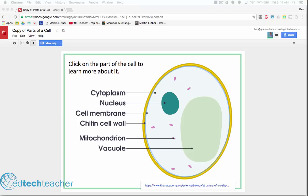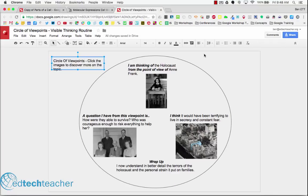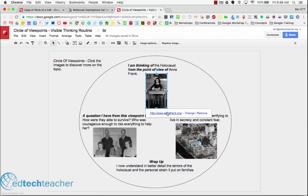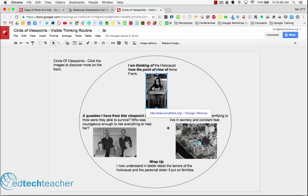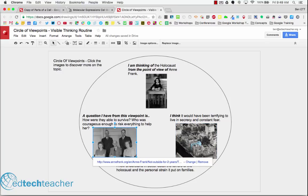Let me just bring in a couple more examples here. Here is an example of a visible thinking routine that I created. Okay, so this is a circle of viewpoints, and so I found the story of Anne Frank. I did this very quickly, but I am thinking of and I put this in, and then now I've got the image of her hyperlinked out to the website. Okay, so I went through the different viewpoints and then found information that kind of answered my questions.